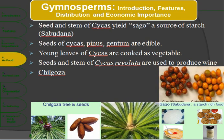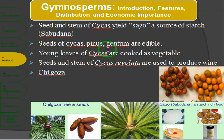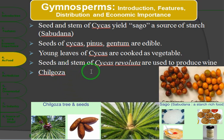As a food: seeds and stem of Cycas yield starch called Sago, which is known as Sabudana. This starch is edible. Seeds of Cycas and Gnetum are also edible. Young tender leaves of Cycas are cooked as a vegetable. Seeds and stem of Cycas revoluta are used to produce wine and beverages.